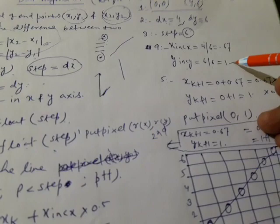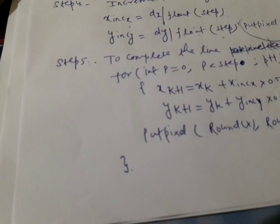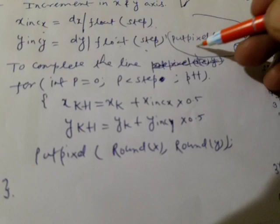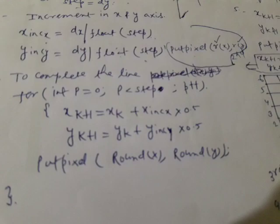After this, we have to put the pixel. We require this because we get the initial value of the pixel — we know where to start — and then the next step will follow. So we can put the pixel. This is the round of x and round of y. If I say it in this way, then zero zero is the first point that I have to plot.